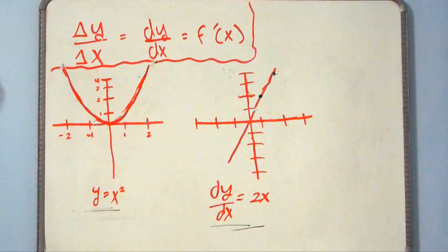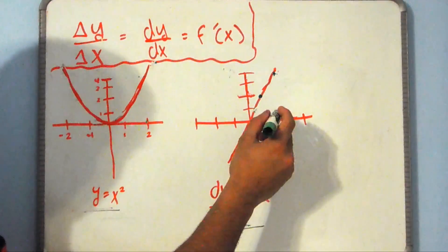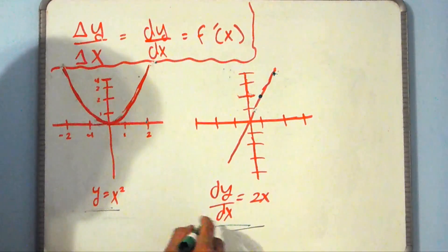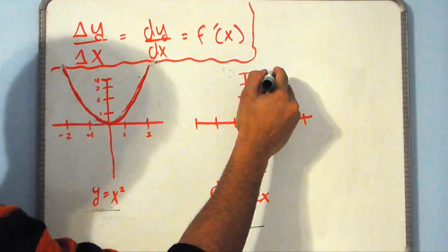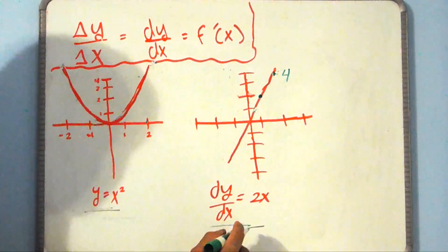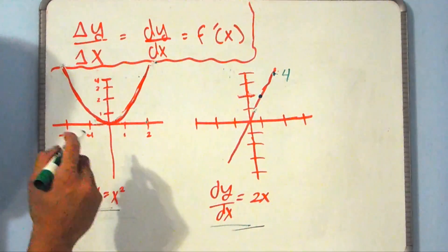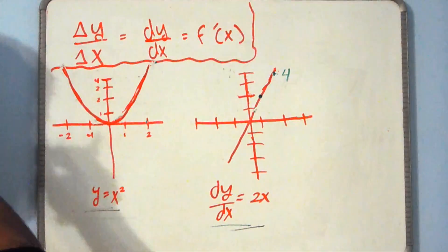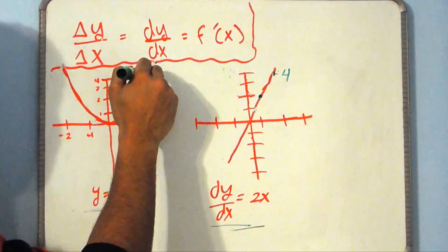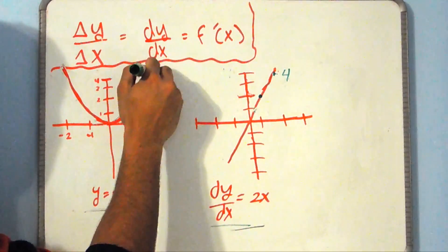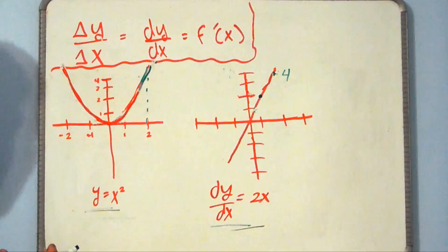And we can further prove this by picking a point. Let's say we take the point x equals 2. At x equals 2, this function is telling you that dy dx equals 4, if you plug in 2. And that means that at the x coordinate 2 on this graph, the slope is 4. Does that make sense? If we draw a dashed line up to the point and draw a tangent line to that, we see that it is about 4 because it's pretty steep.